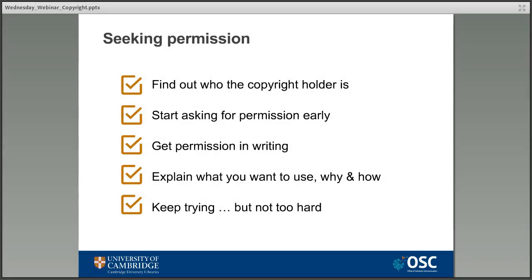If you want to use third-party materials in any work that falls outside a license, educational exceptions, or fair dealing, then you'll need to seek permission. This is usually a fairly straightforward process once you know the steps. First you need to find out who the copyright holder is — usually either the author or the publisher. For published works it should be easy to find: look for the copyright symbol and the details of the copyright holder after it. If you aren't sure who to approach, the publisher is usually a good place to start, because if it's not them they can usually tell you who it is.